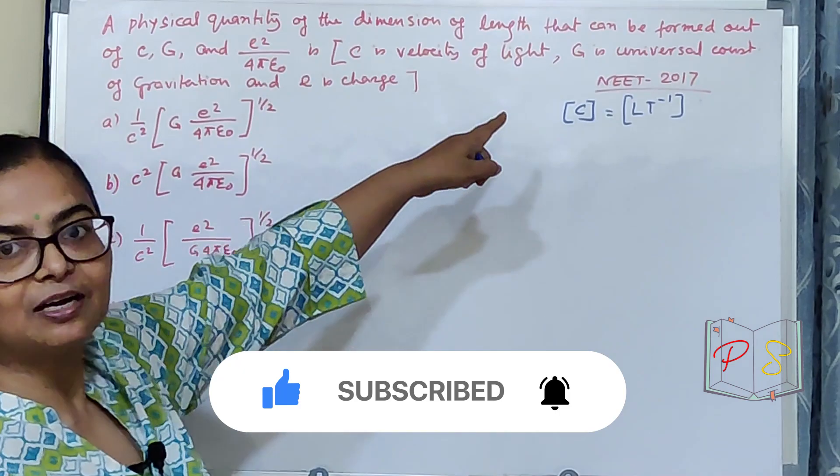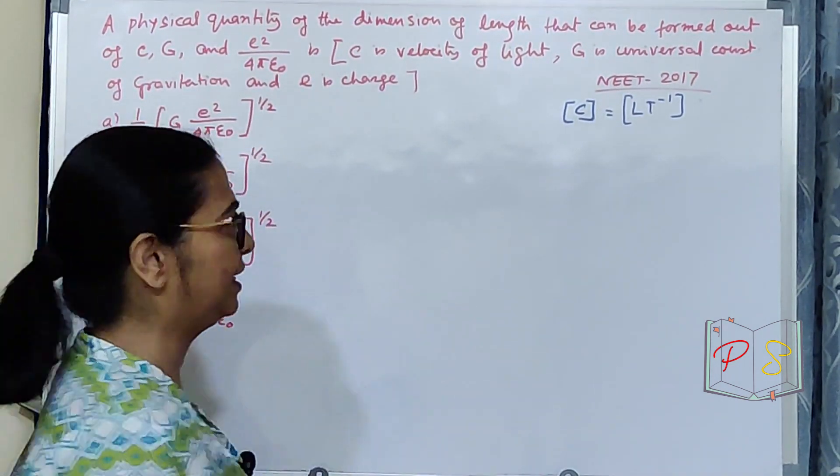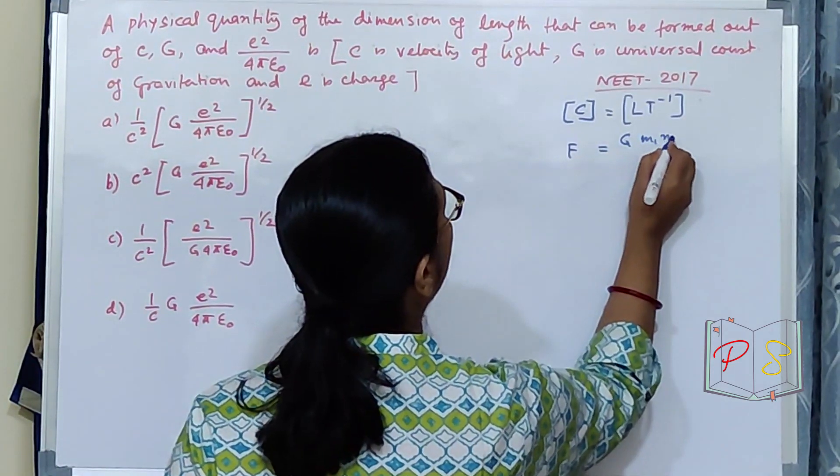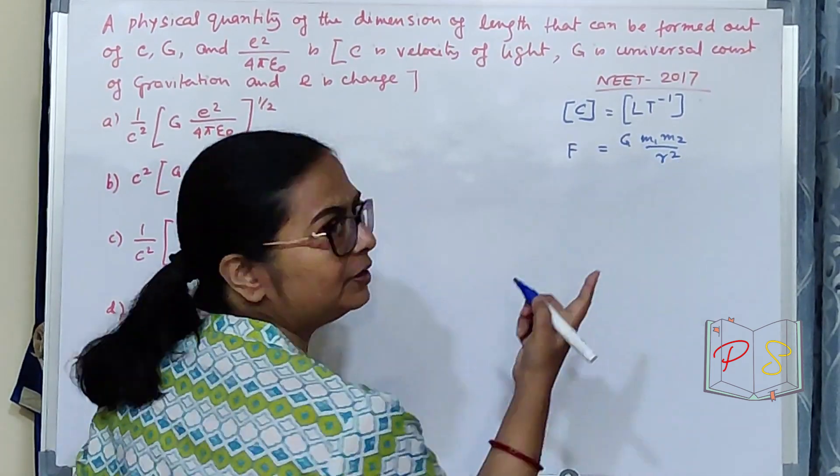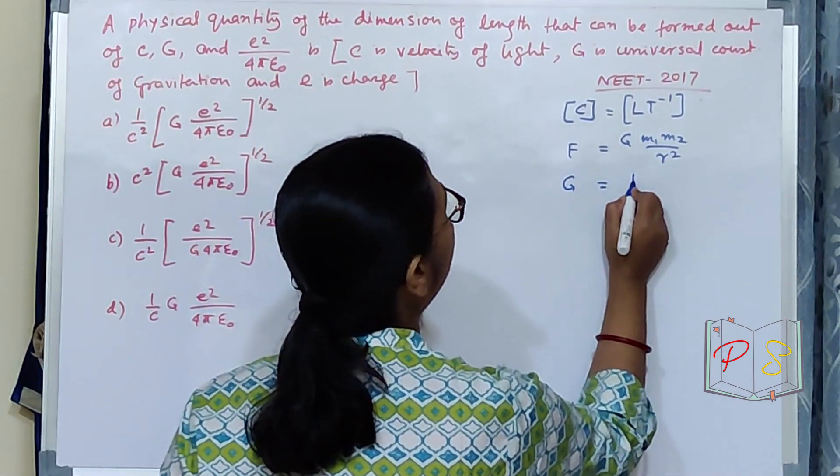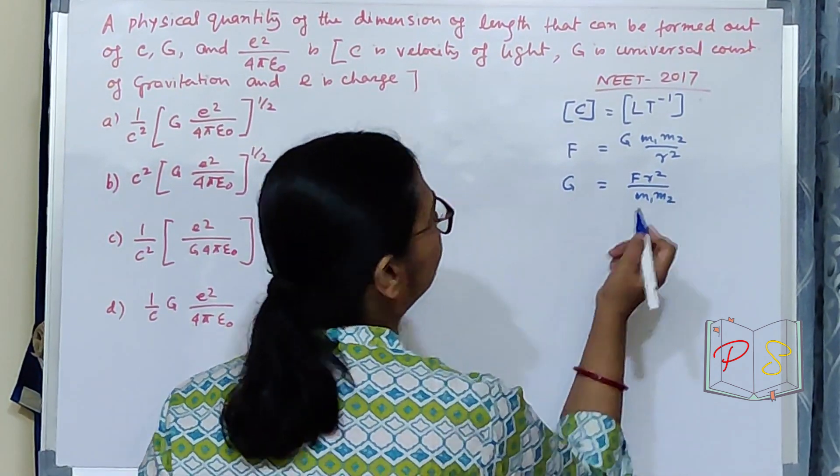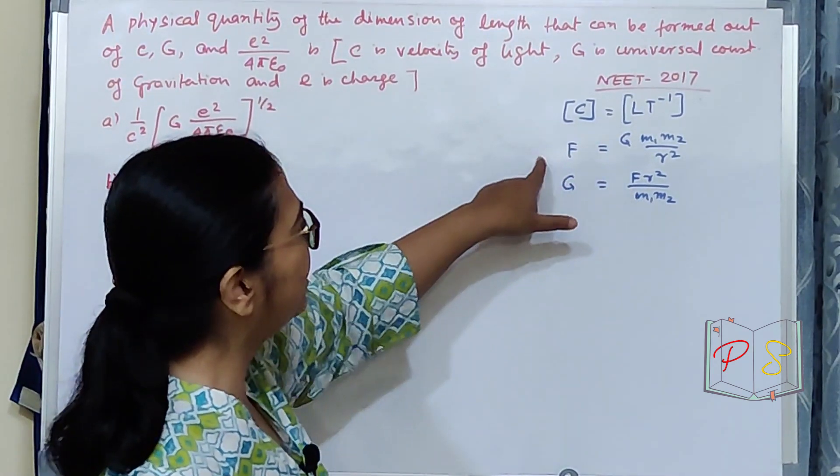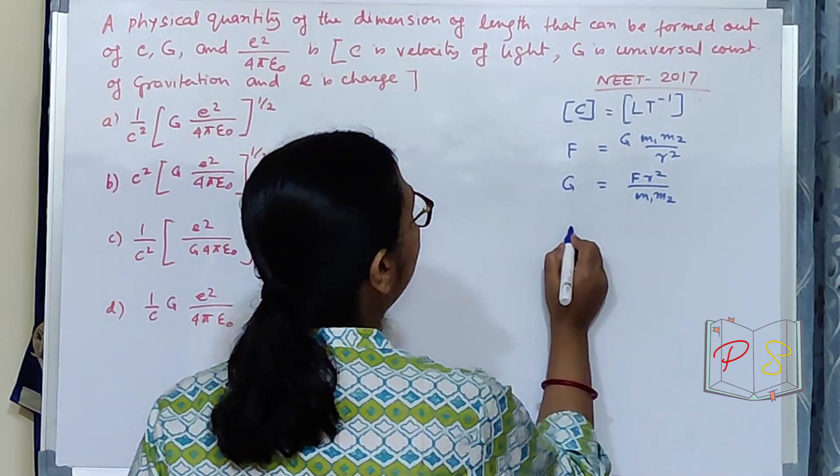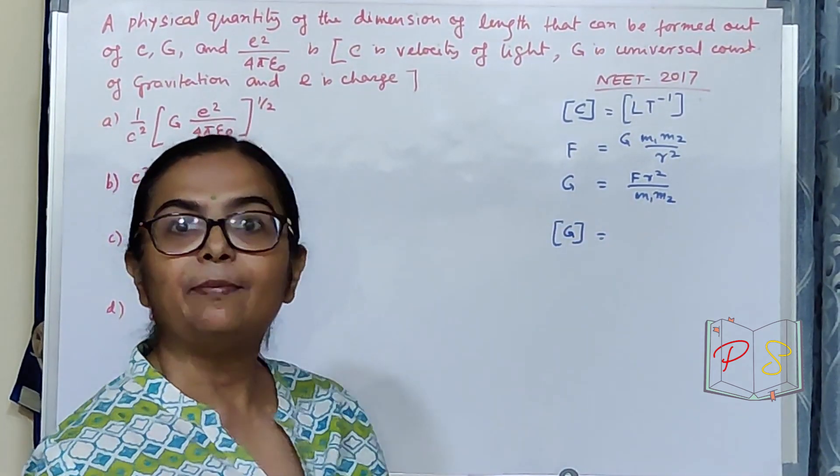Then what is the dimension of G? We will use Newton's law of gravitation. F equal to G M1, M2 upon R square. You know this. So, G equal to FR square divided by M1, M2. Now, you need to know the dimension of G.